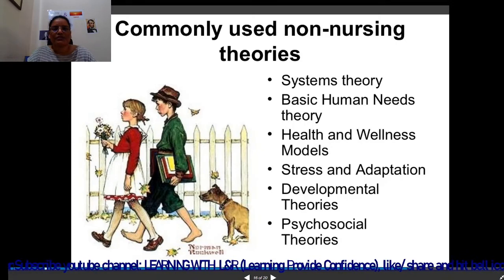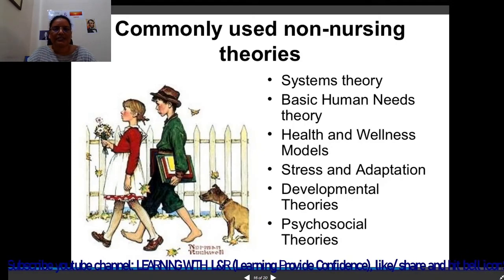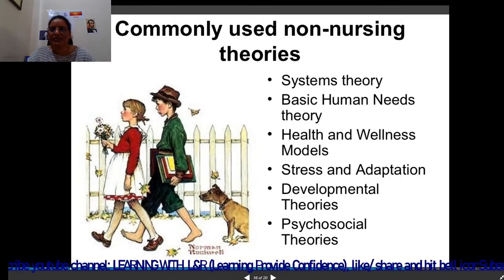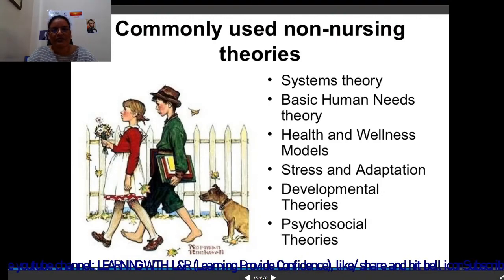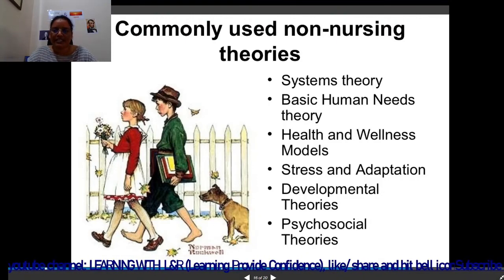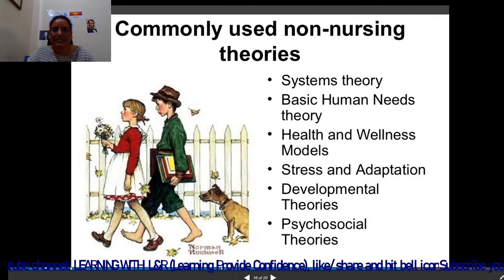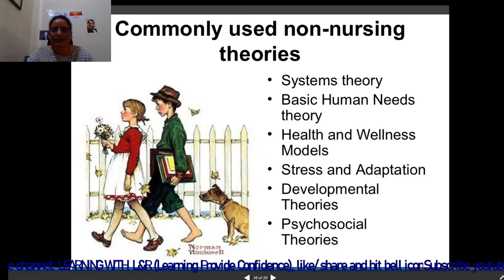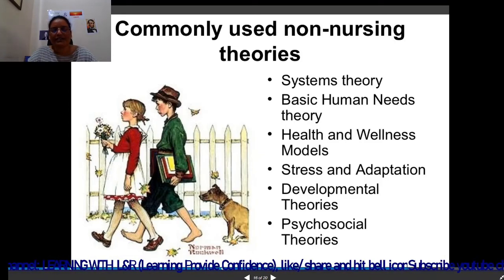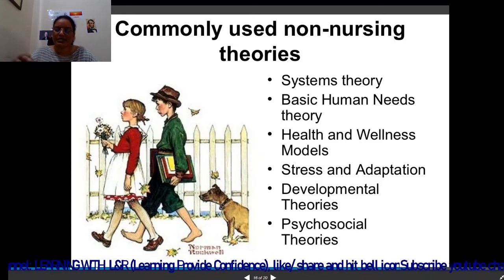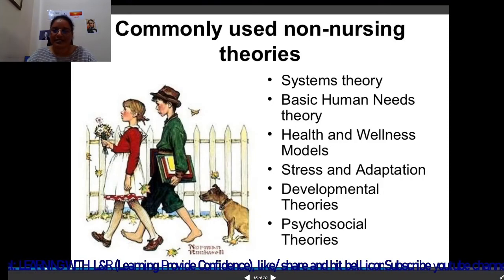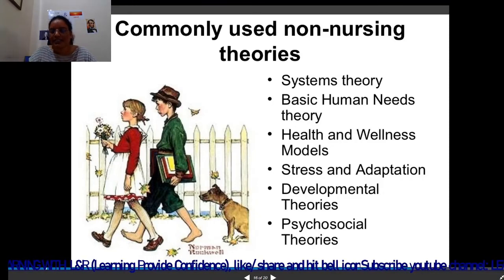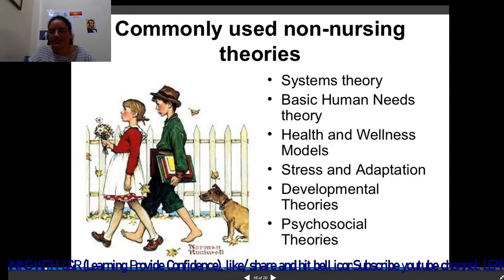Commonly used non-nursing theories are: system theory, basic human need theory, health and wellness model, stress and adaptation, developmental theory, and psychosocial theories — which we are going to discuss in the next lectures in a descriptive way.